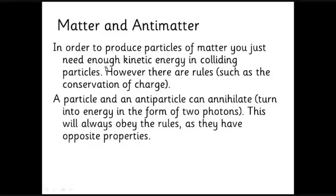To make antiparticles, we collide things and turn that energy into particles. But we can't just make any particle — we need enough energy and must obey conservation rules. A basic one is conservation of charge: you can't just make a positron on its own. You must also produce a negatively charged particle at the same time. In the beta-plus example, a proton turns into a neutron, losing its positive charge — which becomes the positron's positive charge — so total charge is conserved.